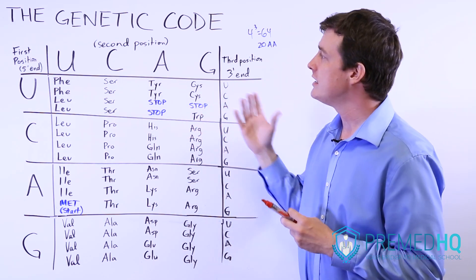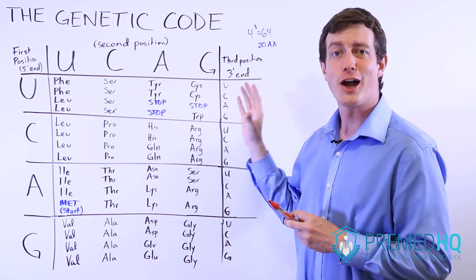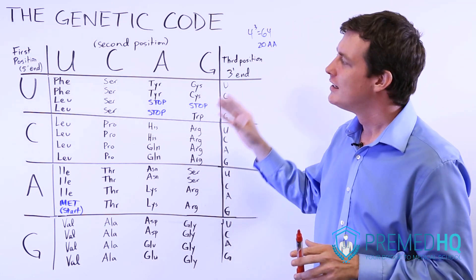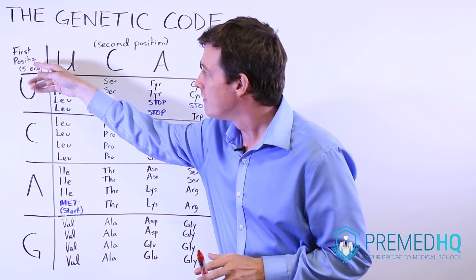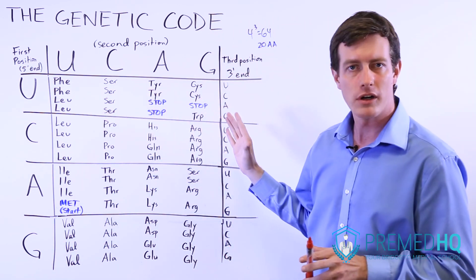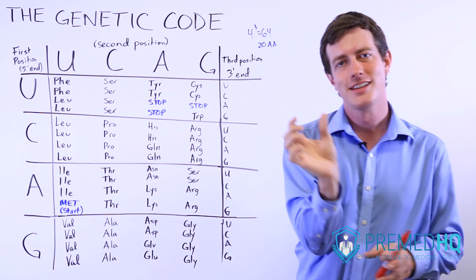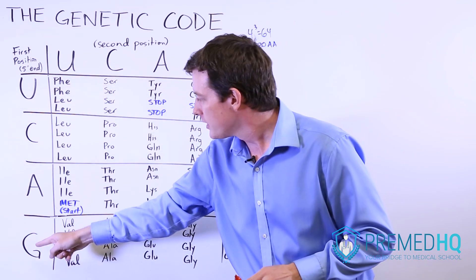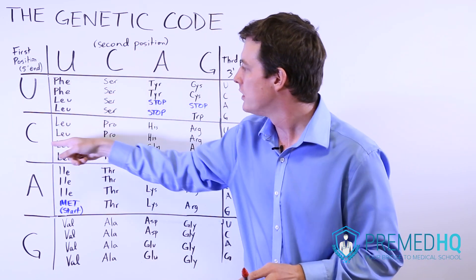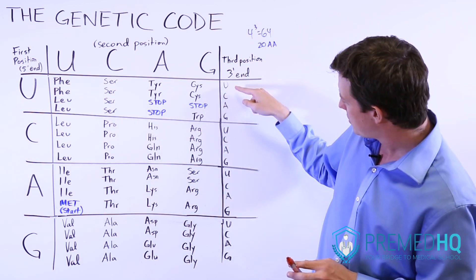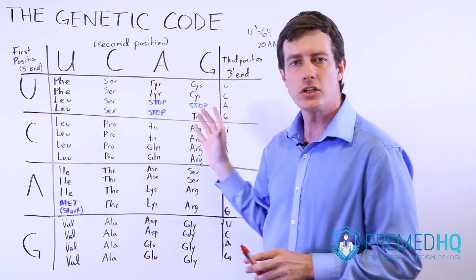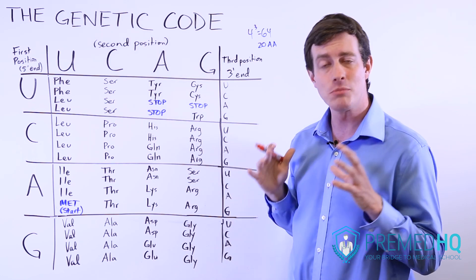The way that you read this table — and the good thing is that you don't have to be responsible for drawing it — is by looking at the first position. This column represents the first position of the three-part codon, and you read these codons from the five prime end to the three prime end. The second position makes the grid, so for example this would be CU, this would be CC. The third position is represented on the right side. If you encounter it on the MCAT, it will be provided to you.